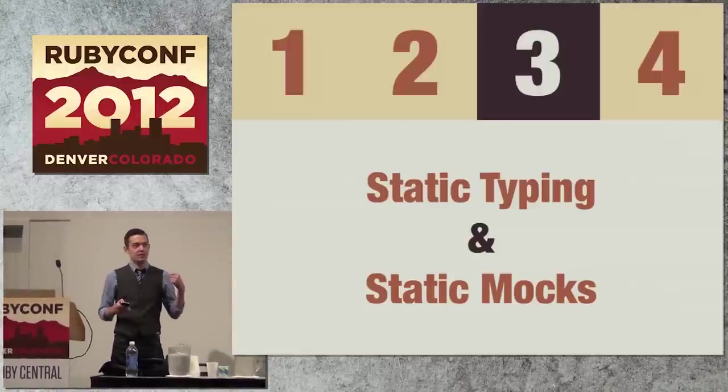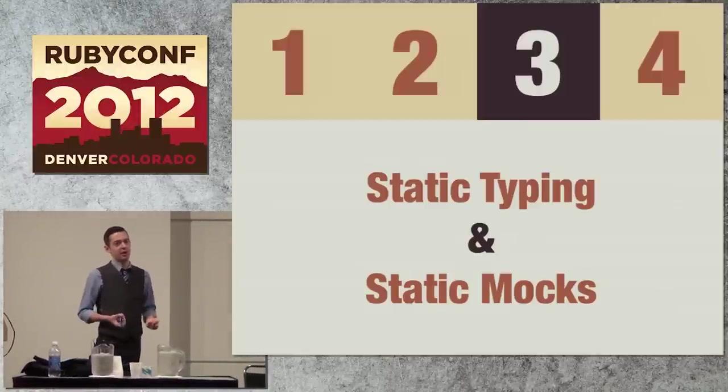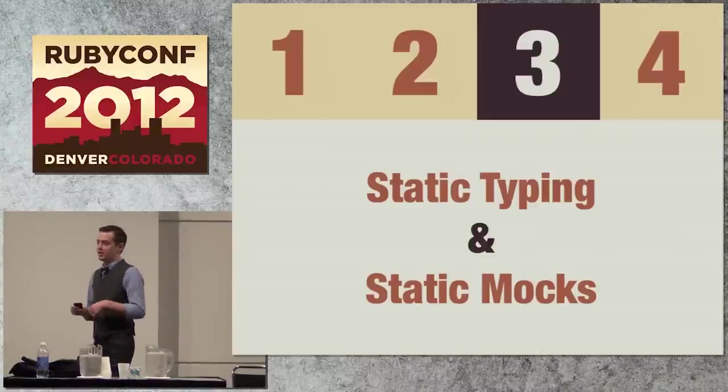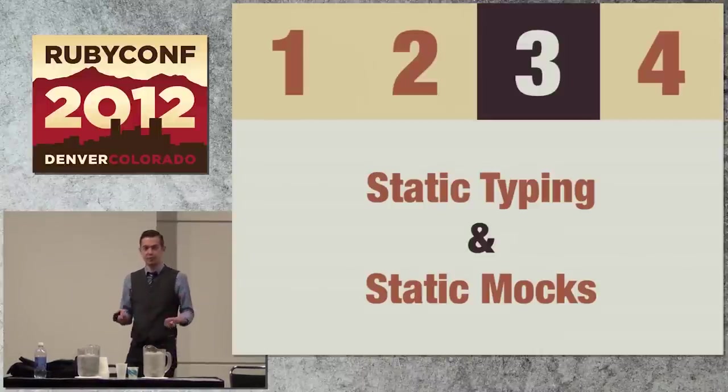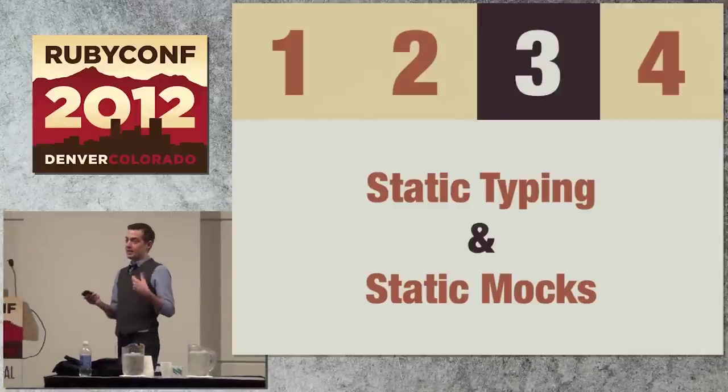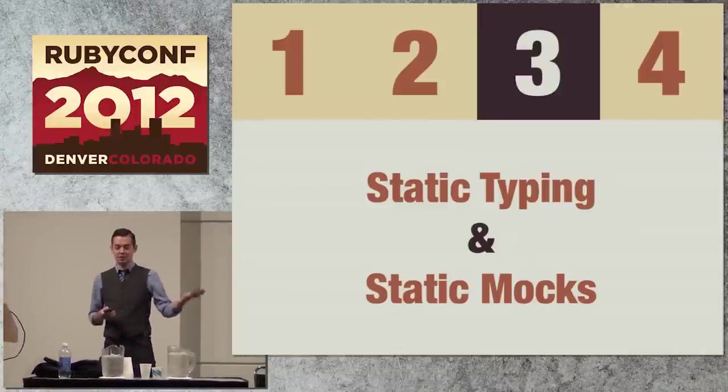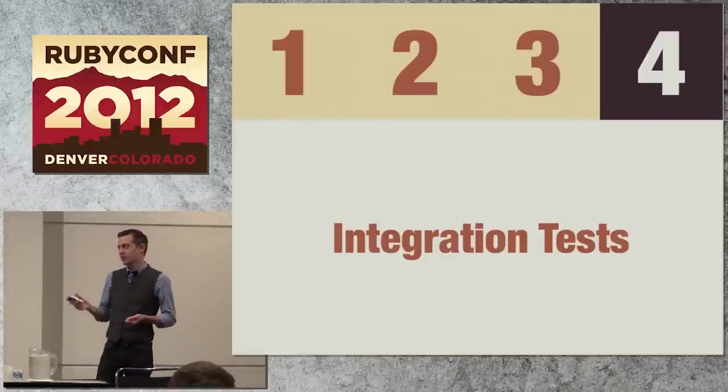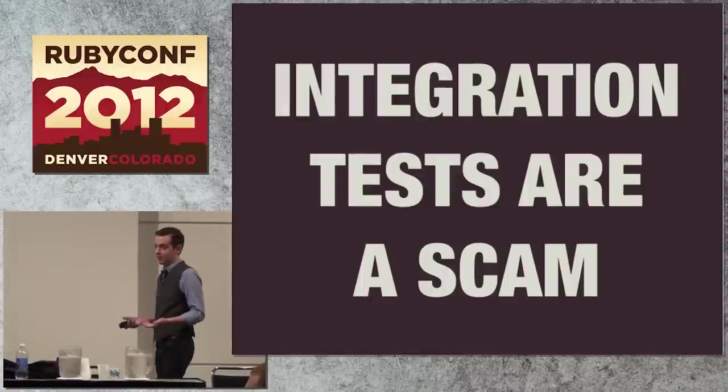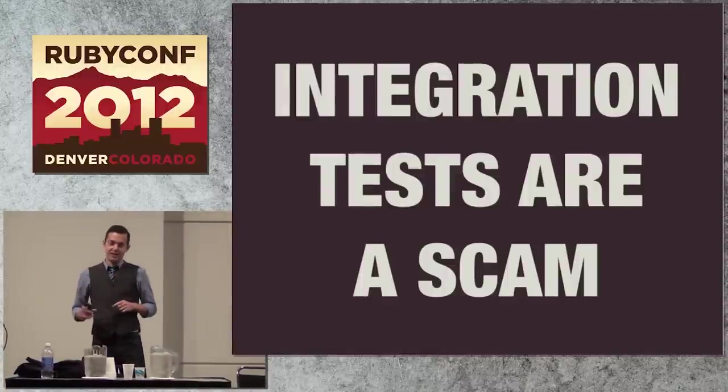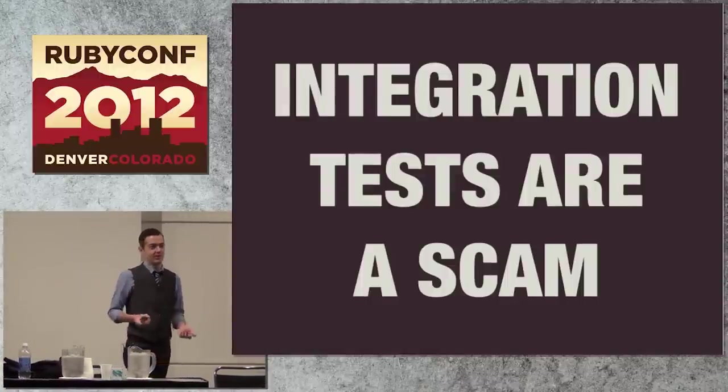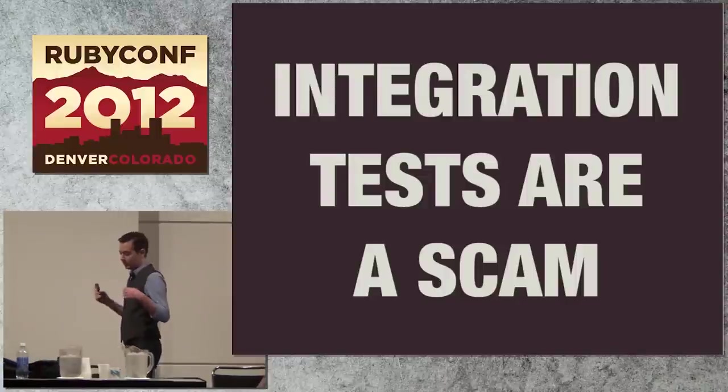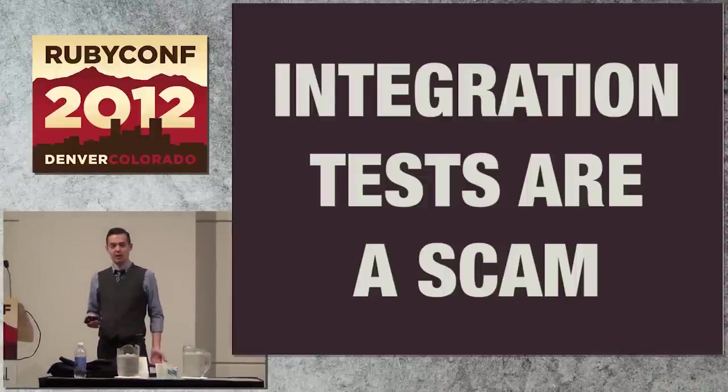All of these only solve simple conascent mismatches between objects. They solve things like, I called the method with the wrong name, like passed the wrong number of arguments. They don't solve deeper things like, my two algorithms that need to cooperate don't actually cooperate correctly. The way that you can solve that, and the most common way people try to fix this problem, is by just not doing isolated unit testing, by just integrating. The problem with solving the isolation problem with integration is that integration tests are a scam.